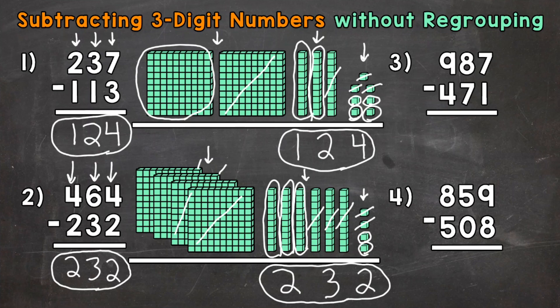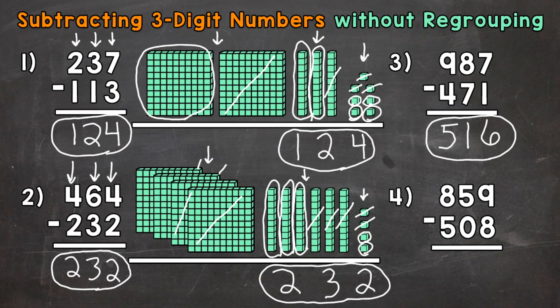Let's move on to numbers three and four, and we're going to solve these without the base-10 blocks. Starting with number three: 987 minus 471. Start with the ones — seven minus one gives us a six in the ones. Move to the tens: eight tens minus seven tens, eight minus seven gives us one. And then lastly, the hundreds: nine hundreds minus four hundreds, nine minus four gives us five. So we get a final answer of 516.